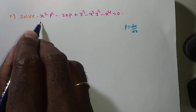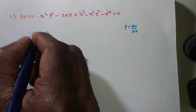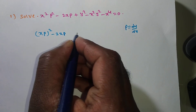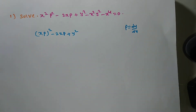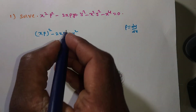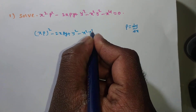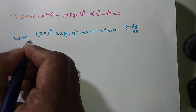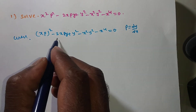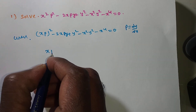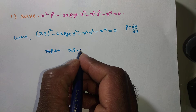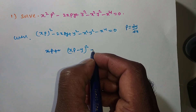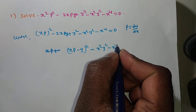Observe: this is x²p². So you can write the given differential equation as (xp)² - 2xp·y + x²y². Now this is in the form a² + b² - 2ab, which equals (a - b)². Rearranging gives (xp - y)² - (x²y² + x⁴) = 0, so (xp - y)² = x²y² + x⁴.